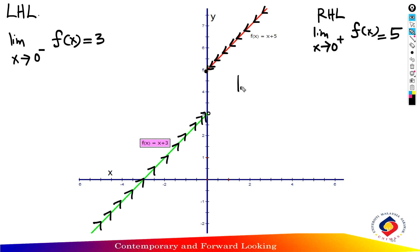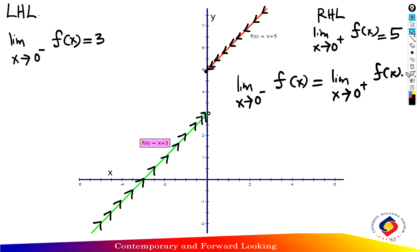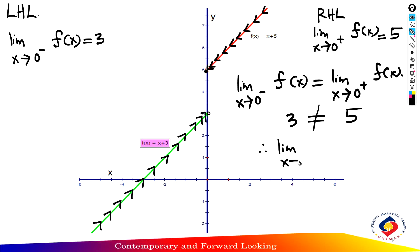Find the right hand limit: from positive infinity approaching x equal to 0, the value of y approaches 5. So the right hand limit equals 5. Comparing the left hand limit and right hand limit: they are not equal — left equals 3, right equals 5 — because they approach different values from both sides. Therefore, the limit of f(x) does not exist.